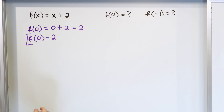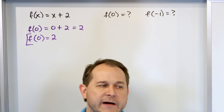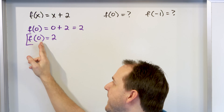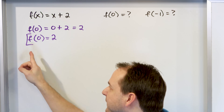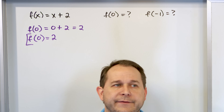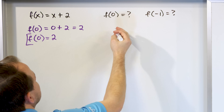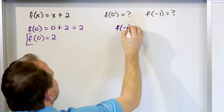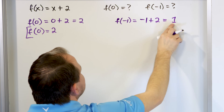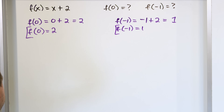Now you have to be careful: up until now we've been using parentheses to mean multiplication, but when writing functions it never means multiplication. It means the function f evaluated at x equals 0 gives the value 2. It does not mean f times 0. To do the other evaluation, f at x equals negative 1 means we stick negative 1 in: negative 1 plus 2 gives us positive 1, so f evaluated at negative 1 gives us 1.